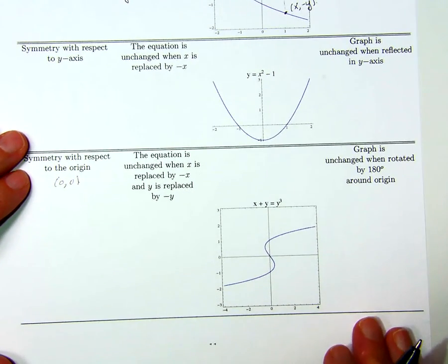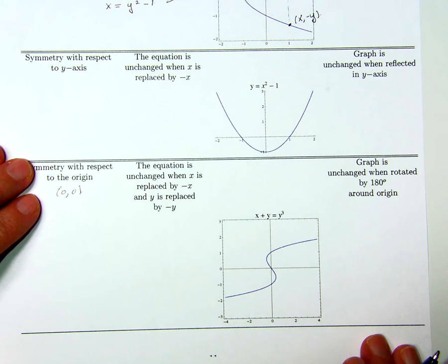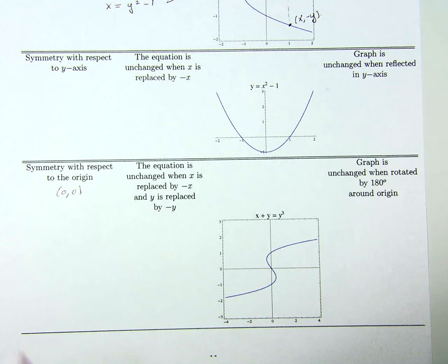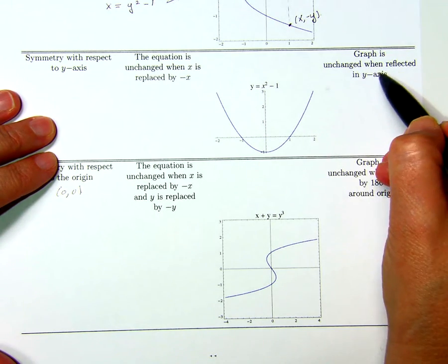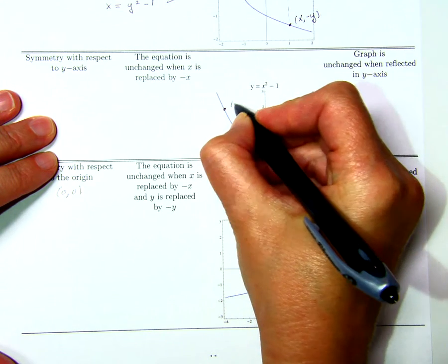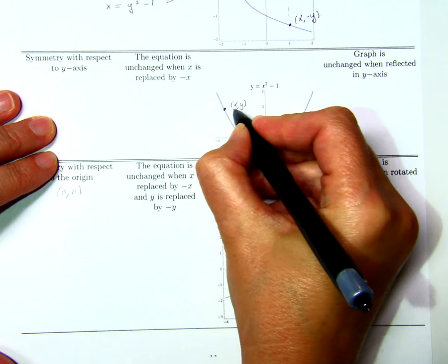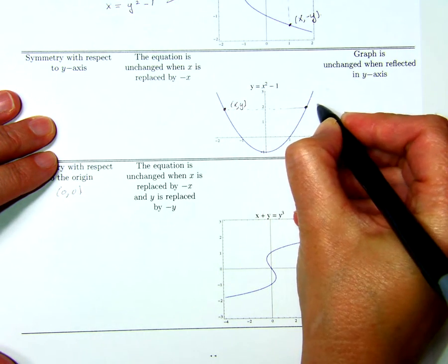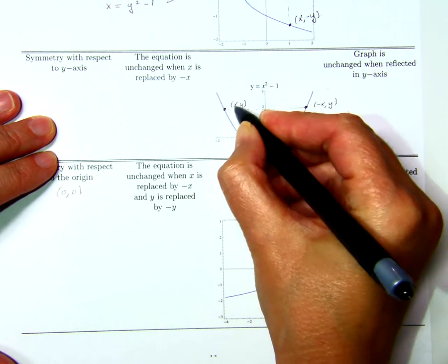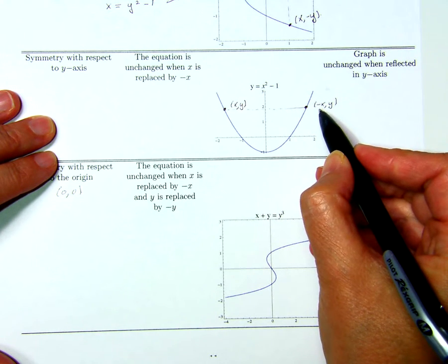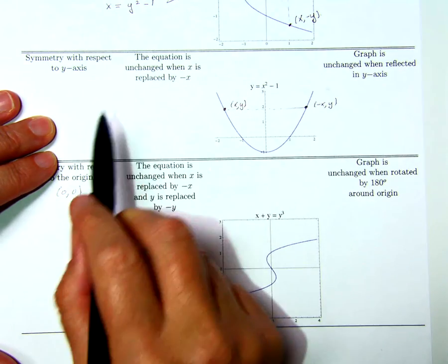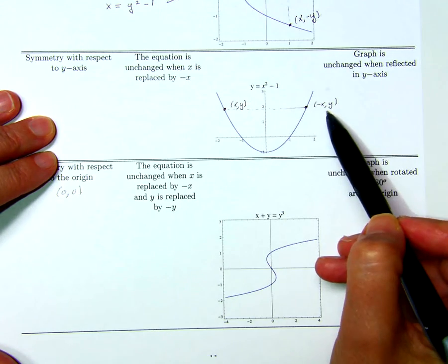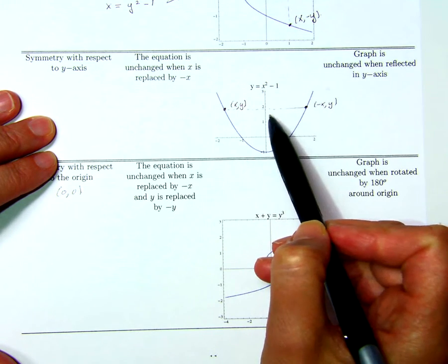How would I identify symmetry with respect to the y-axis? This is interchanging the roles of x and y, so the same test should work with x and y switched, and that's exactly what happens. Symmetry with respect to the y-axis means the graph is unchanged when reflected in the y-axis. That means that for any point (x, y) which satisfies the equation, (-x, y) also satisfies the equation, so the graph must have this symmetry.